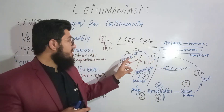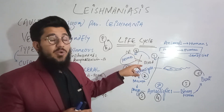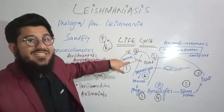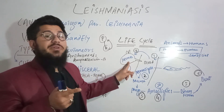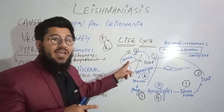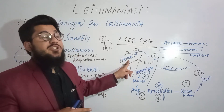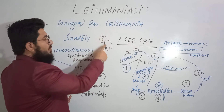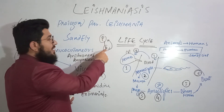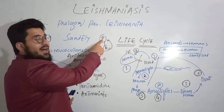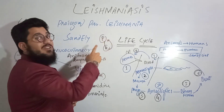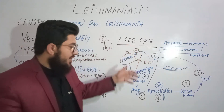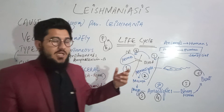Now if the sand fly bites this person again, it takes the amastigotes from the blood. These amastigotes come back into the gut of the sand fly, where they are converted back into promastigotes. Then again these promastigotes are available to be injected into another human, and those promastigotes convert into amastigotes again. So the life cycle continues: promastigotes → amastigotes in humans → taken by sand fly → converted back to promastigotes → injected into another human.